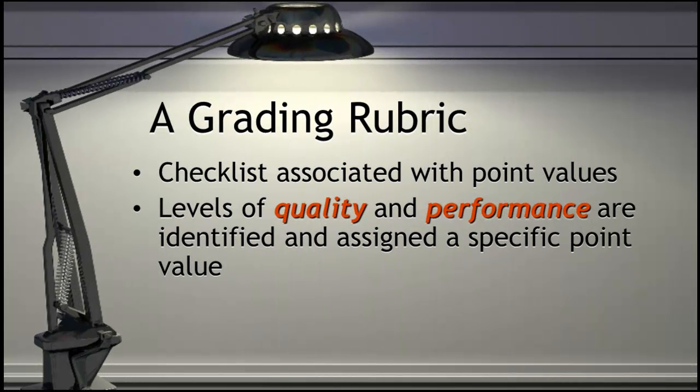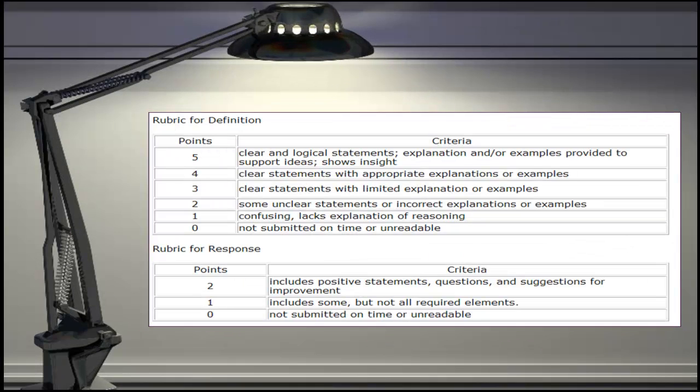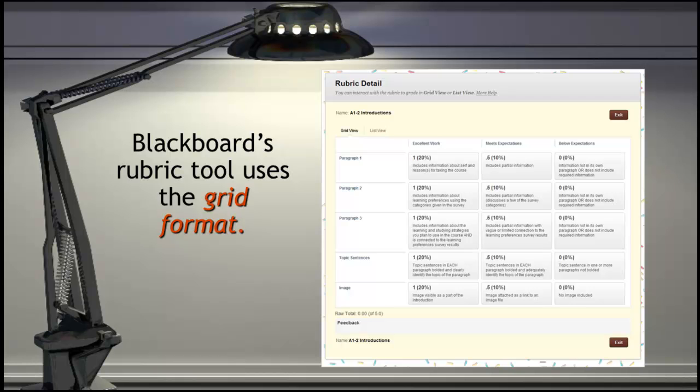Another style of rubric resembles a checklist associated with point values. In this case, the levels of quality and performance, called descriptors, are identified and assigned a specific point value. Here is an example of a checklist rubric. Blackboard's rubric tool uses the grid format.